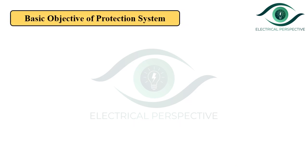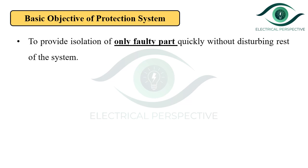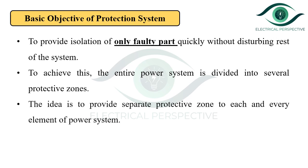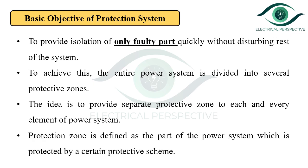What is the basic objective of a protection system? The basic objective is to provide the isolation of only the faulty part quickly, without disturbing the rest of the system. To achieve this objective, the entire power system is divided into several protective zones. The idea is to provide a separate protective zone to each and every element of the power system. A protection zone is defined as the part of the power system which is protected by a certain protective scheme.